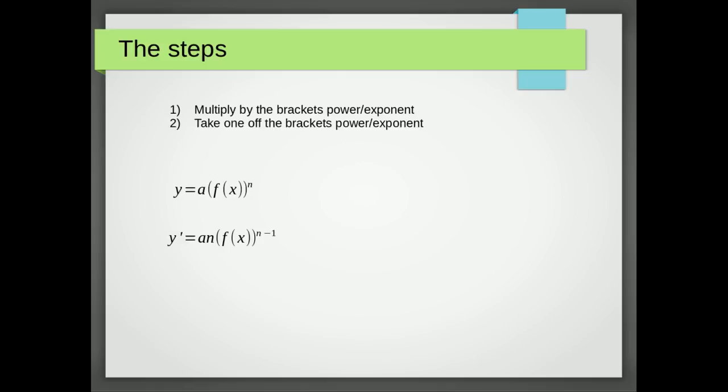The next thing we do is take one away from that power. And finally we multiply the result by the inner part of the bracket differentiated.